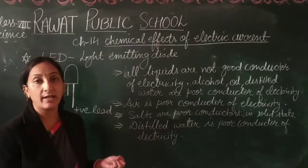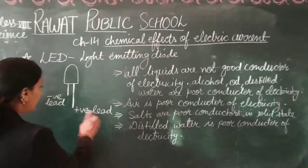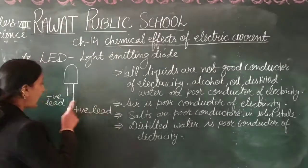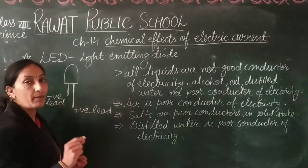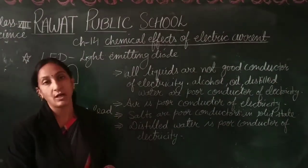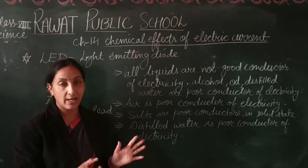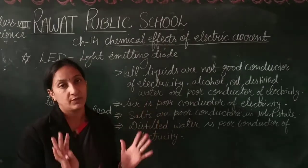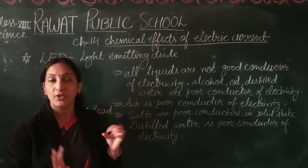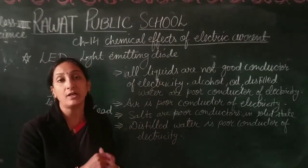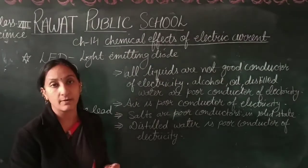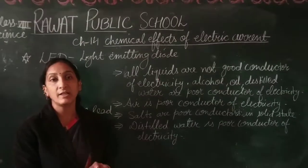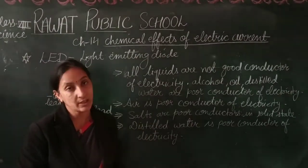When we connect the LED in the circuit, the positive leg is connected to the positive terminal of the battery, and the negative leg is connected to the negative terminal. Whenever current flows through the circuit, the LED will glow — even if the current is very weak.